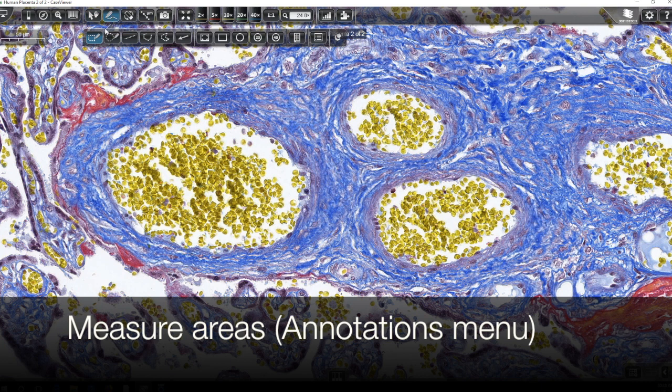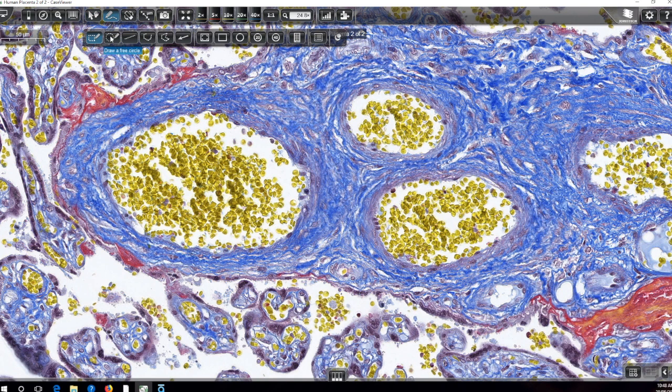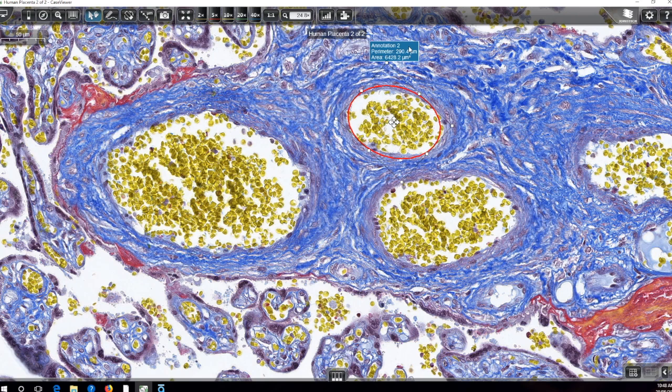Now there's an alternative way to generate measurements using this software from the annotations menu. So you see we've got a series of shaped icons. One way if you're just looking to get an approximate measurement is you can select this circle or oval tool and then by right clicking we can make some minor adjustments so that it fits a little bit better. So we see there we've got an approximate area of about 6428 square microns.